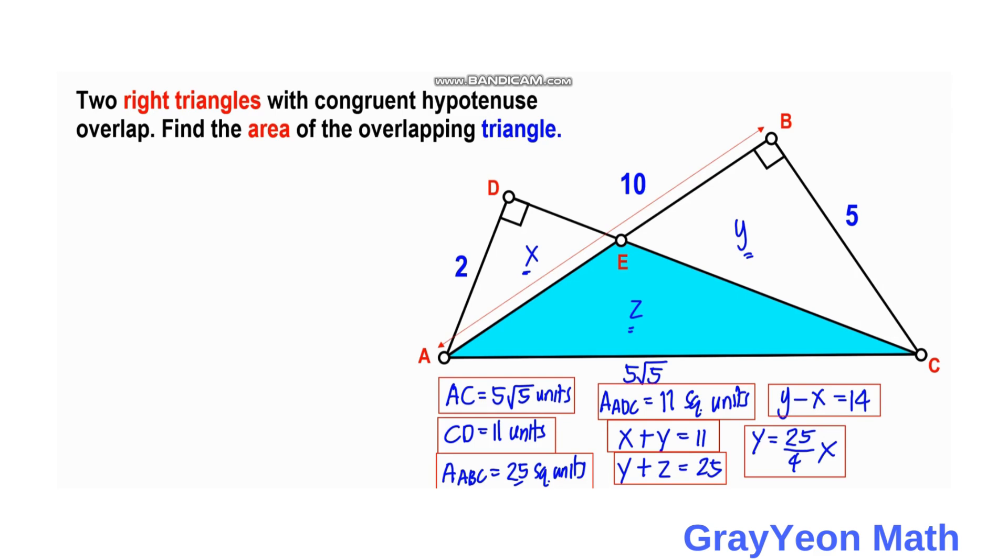Going back to Y minus X equals 14, since we already got the relationship between X and Y, where Y equals 25 over 4 X, we can replace Y with 25 over 4 X minus X equals 14. We get the LCD, which is 4, so 25X minus 4X.